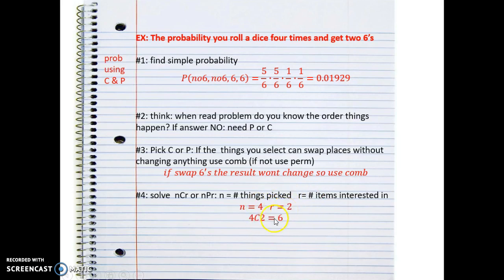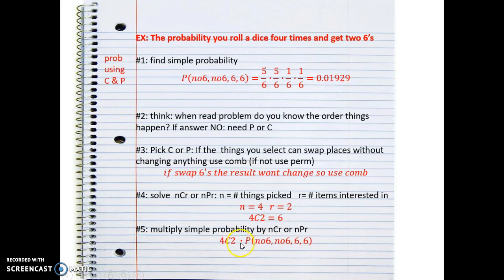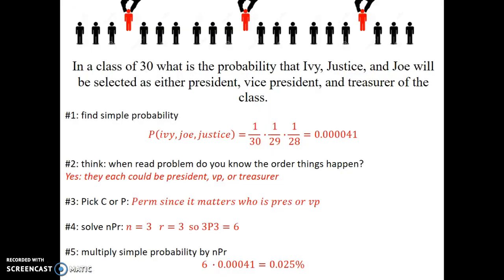I need to solve for my combination. N is the number of things I pick - I'm rolling four dice, so N is four. R is the number of items I'm interested in - I'm interested in two sixes, so R is two. That gives me 4C2, which equals six. The last step is to multiply the simple probability by that combination number. So I do 4C2 times the simple probability and I end up with 11.57%. That means the probability of rolling four dice and getting two sixes is 11.57%.